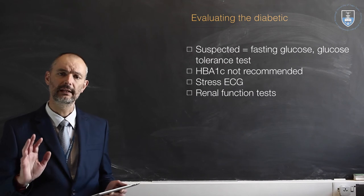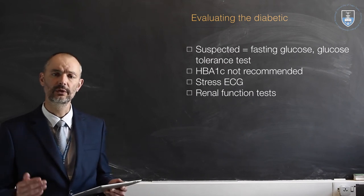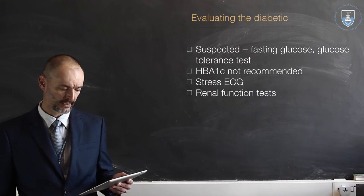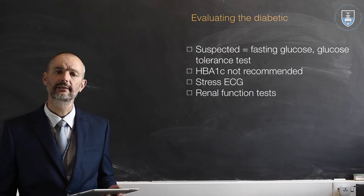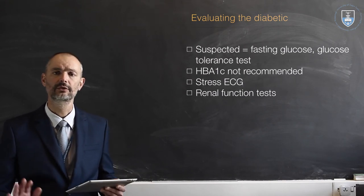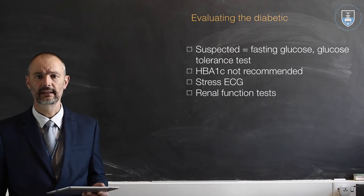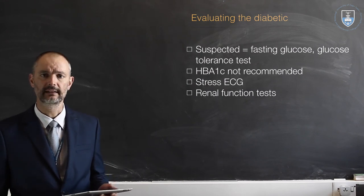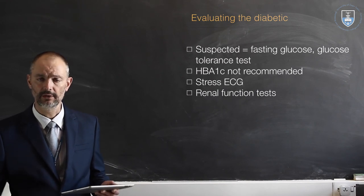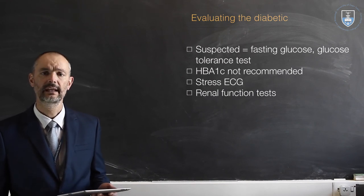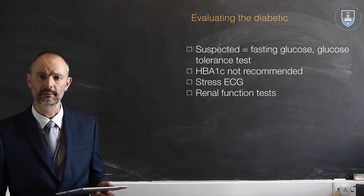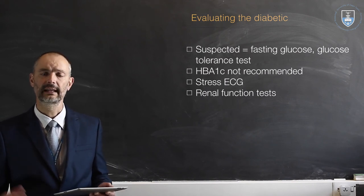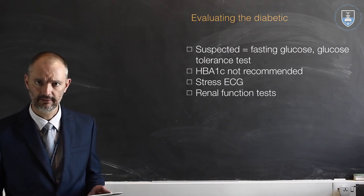Once a diabetic has been diagnosed, or you see a patient coming for surgery who is diabetic, there is a suggestion that this is your chance to examine at least their heart and kidneys. Consider sending these patients for a stress ECG to look at their coronaries, and do renal function tests — we want to know the blood urea nitrogen, urea and creatinine, and especially the electrolytes.